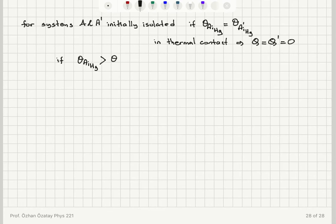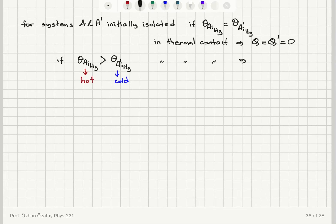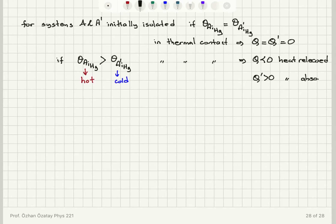On the other hand, if the initial thermometric parameter reading for system A is larger than for system A-prime, then A is the hot system and A-prime is the cold system. Heat will flow from the hot system to the cold system. The heat absorbed by system A will be negative — it releases heat — while the heat absorbed by A-prime will be positive.